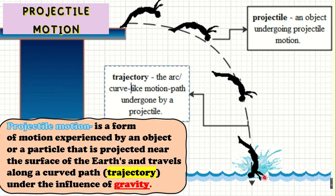Projectile motion is a form of motion experienced by an object or a particle that is projected near the surface of the Earth and travels along a curved path that is known as trajectory under the influence of gravity. Once you say projectile, that is an object undergoing projectile motion. And once you say trajectory, that is the arc curve-like motion path undergone by a projectile.